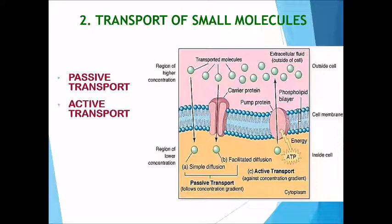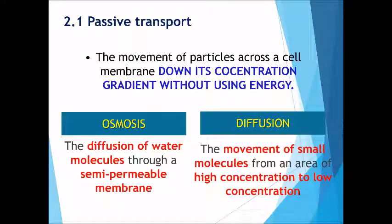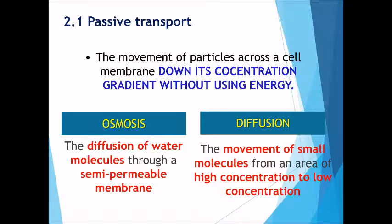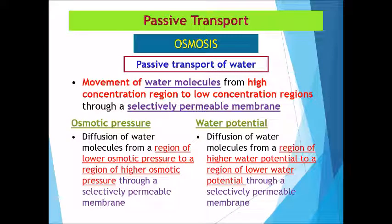The transport of small molecules is divided into two types: passive transport and active transport. Passive transport refers to the movement of particles across the cell membrane down their concentration gradient without using energy. There are two types of passive transport: osmosis and diffusion. Osmosis refers to the diffusion of water molecules through a semi-permeable membrane, while diffusion refers to the movement of small molecules from an area of high concentration to lower concentration through the selectively permeable plasma membrane.